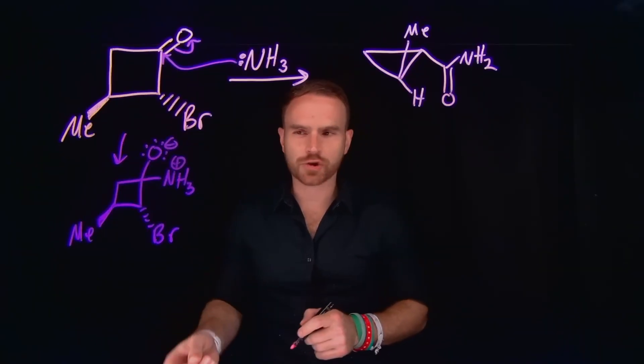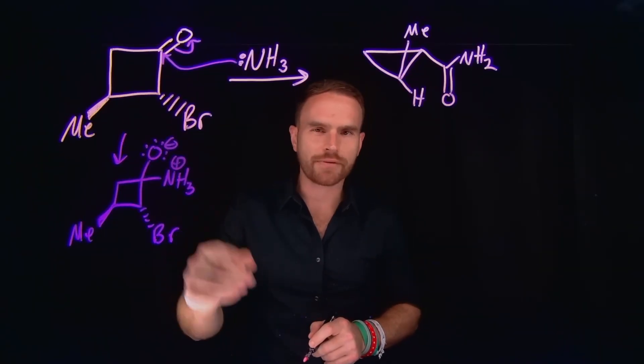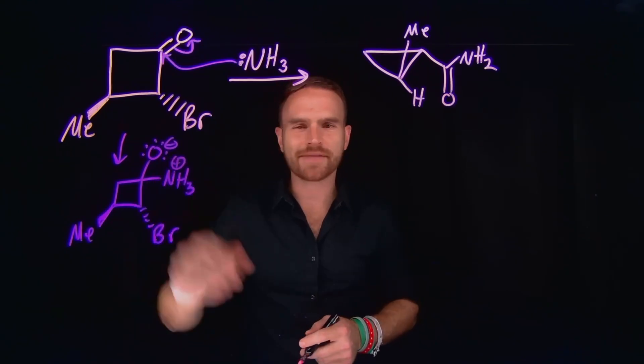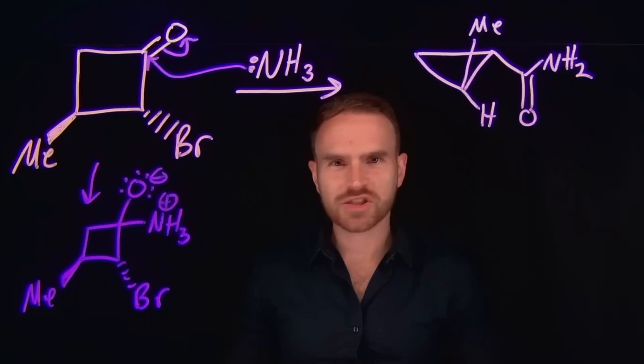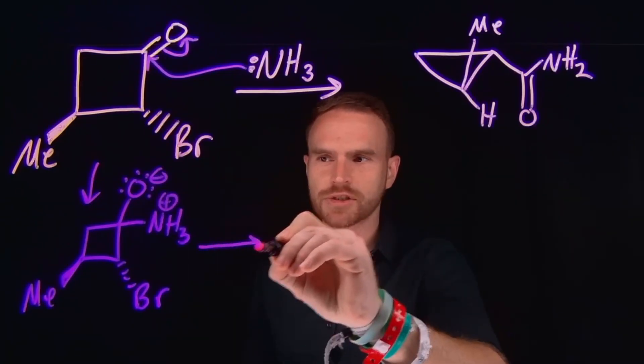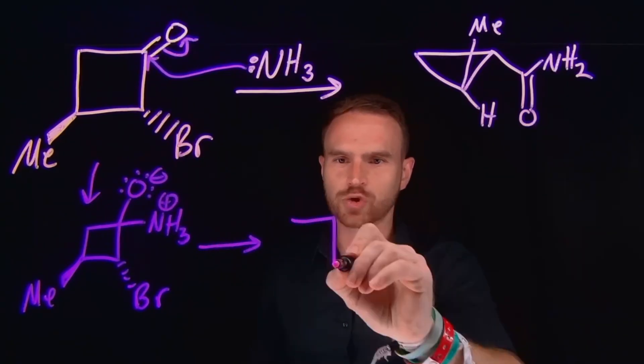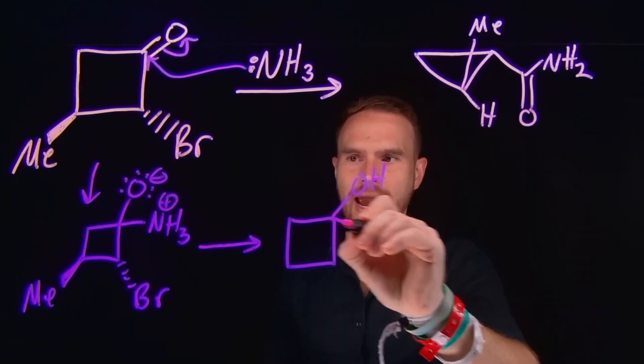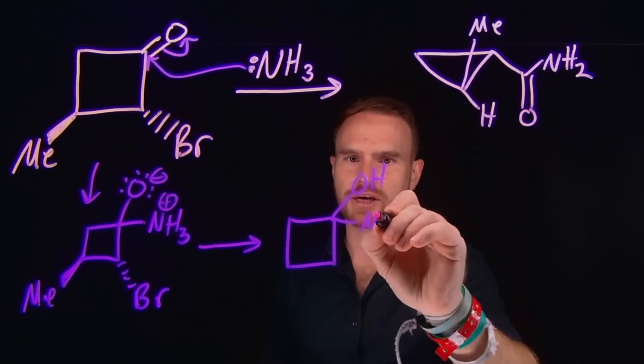And from here, all that needs to occur is a proton transfer where you would abstract a proton from this NH3 group, and then subsequently you would protonate the negatively charged oxygen to make an alcohol. So following those two proton transfers, then what we end up with is a completely neutral molecule where that oxygen has now been turned into an alcohol,